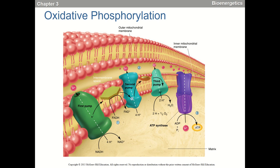At the very end of the electron transport chain, oxygen accepts those hydrogen ions and electrons — so we produce metabolic water there. Oxygen is the final electron acceptor. That's essentially how we make the energy to run marathons, lift weights, or whatever activity you're doing.